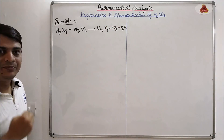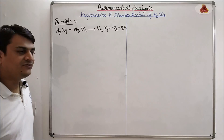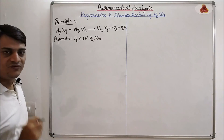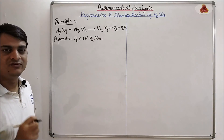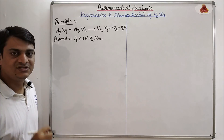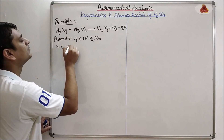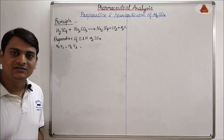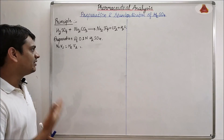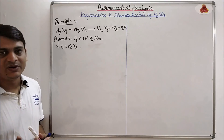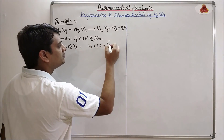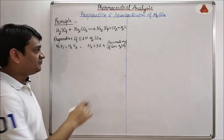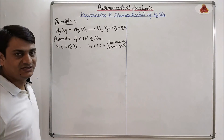Now coming to the preparation of 0.1 normal H2SO4. For this preparation we are using the formula N1V1 = N2V2. The normality of laboratory supplied H2SO4 is approximately 36.4 normal, so the value of N1 is equal to 36.4 normal.